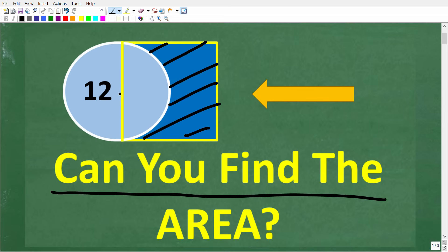And this side of the square runs through the center of this circle, and this distance is 12. So that is all the information. Again, we want the area of this region right here.